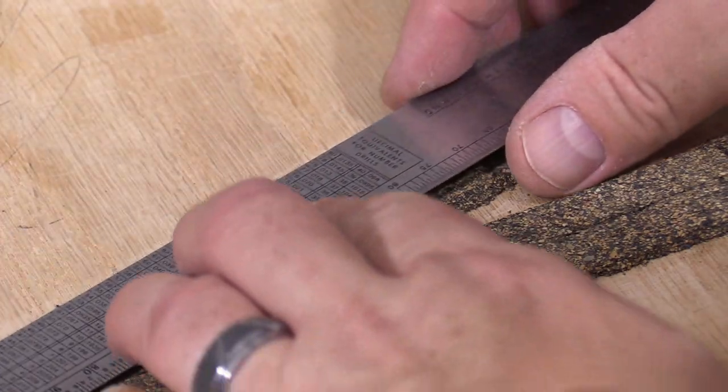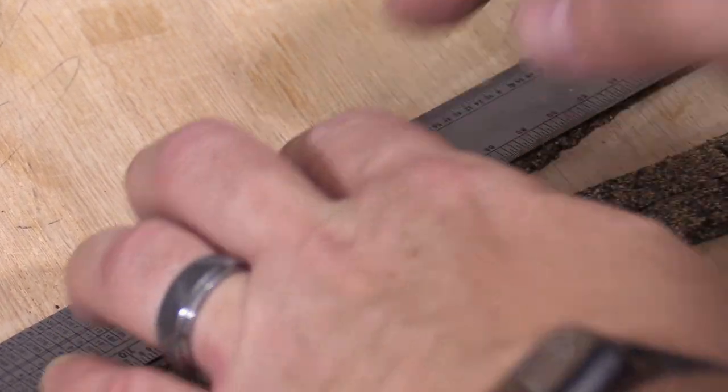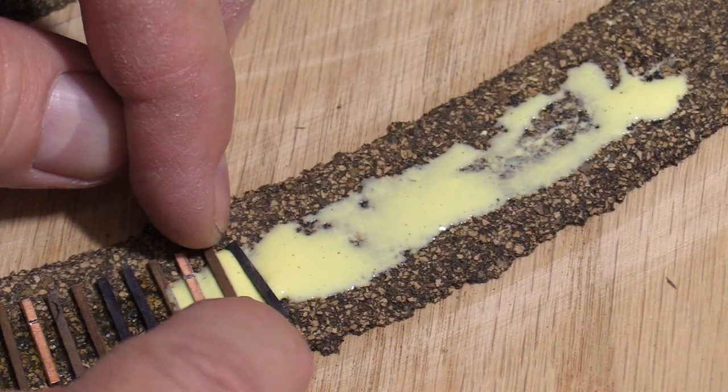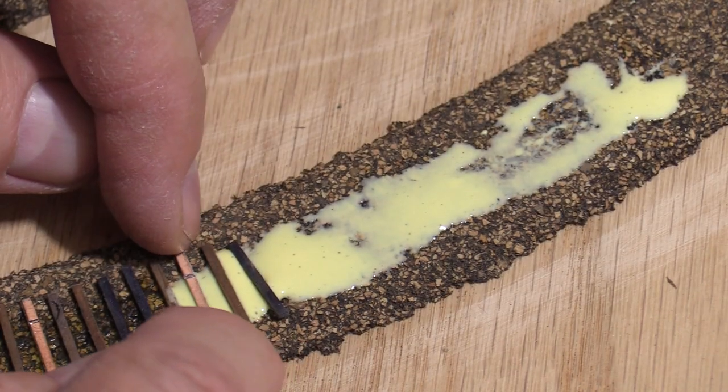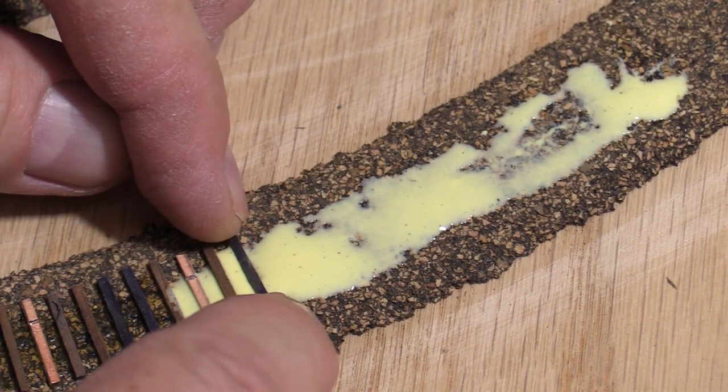After I've done a stretch of ties, I use something flat like this scale rule to gently press them down onto the roadbed. The ties should be perpendicular to the centerline. On curves, this will put each tie at a slightly different angle than its neighbor. The yellow glue dries slowly, so there's time to make adjustments as needed.